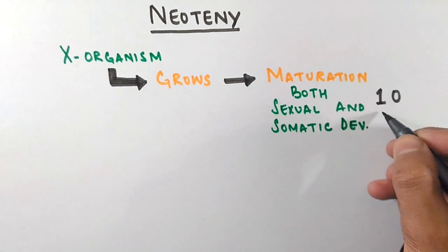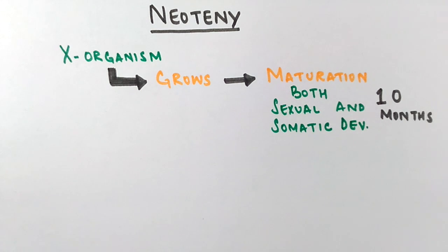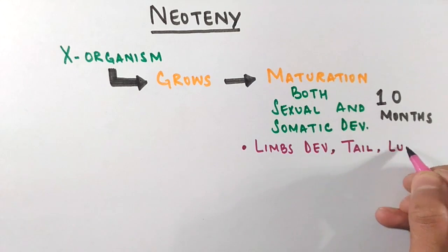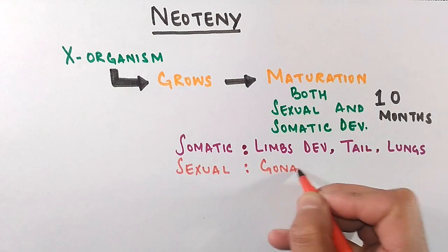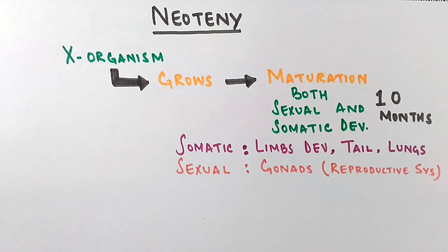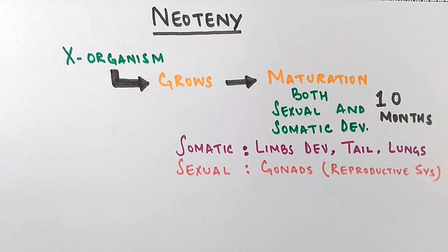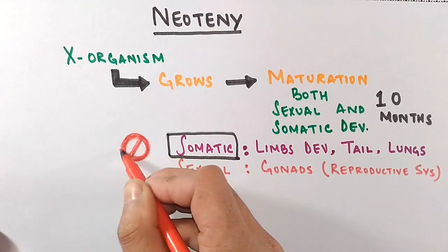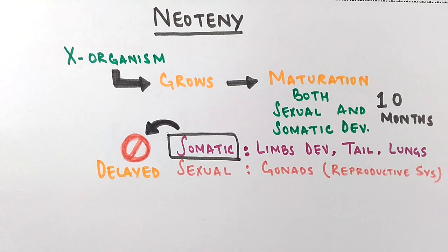Let's assume it takes 10 months for the organism to mature completely — both somatically and sexually. In those 10 months, somatic development includes limb development, tail, lungs, and all other parts. In terms of sexual development, the gonads develop with mature germ cells. In neoteny, somatic development is delayed, so only sexual development occurs at the normal rate. Even though somatic development is delayed, sexual development continues at a constant pace, and the larva eventually becomes sexually mature.